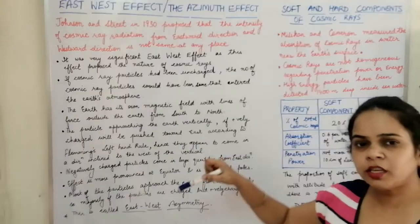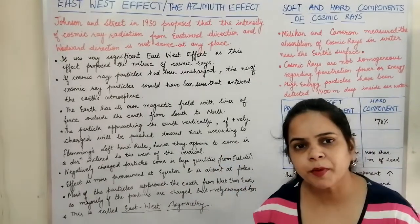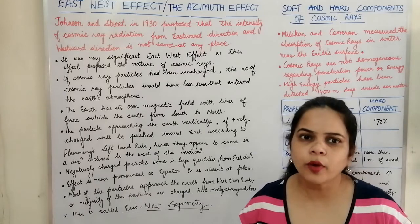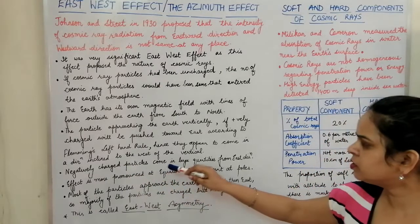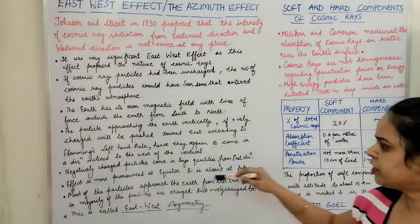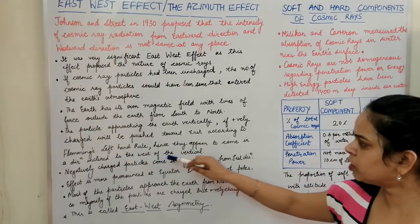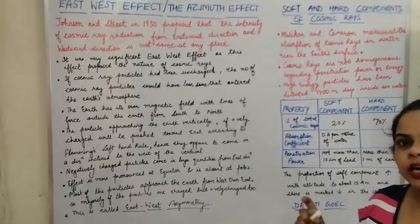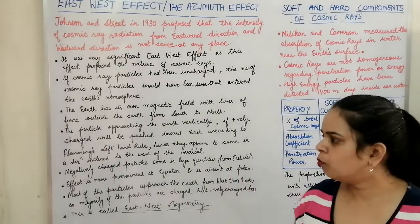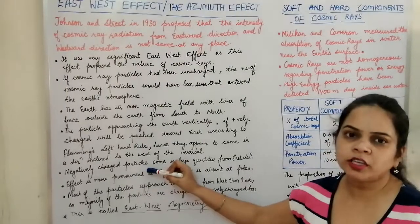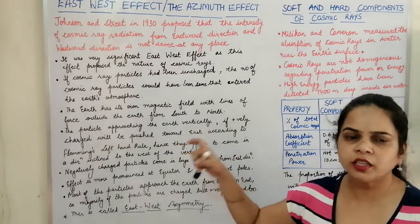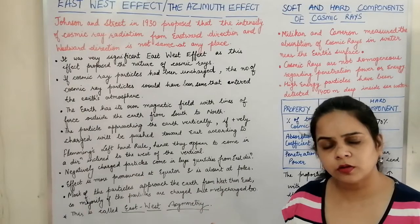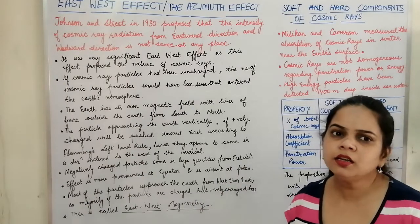Similarly, if positive particles are pushed toward the east, negatively charged particles will be pushed toward the west. So the concentration of particles will be different along the east and west directions. Negatively charged particles will come in large quantities from the east direction, while positively charged particles appear to come from the west. The concentration of negatively charged particles is greater in the east direction, and the concentration of positively charged particles is greater in the west direction.